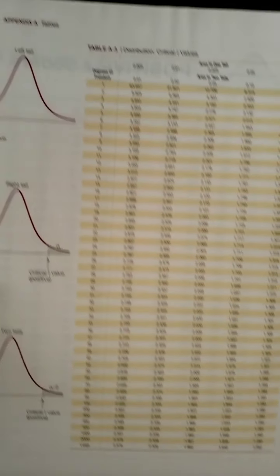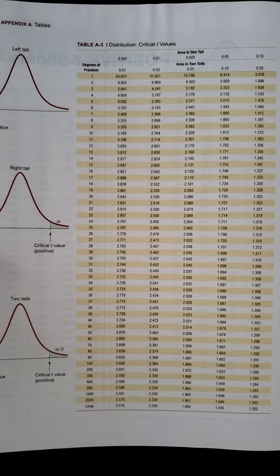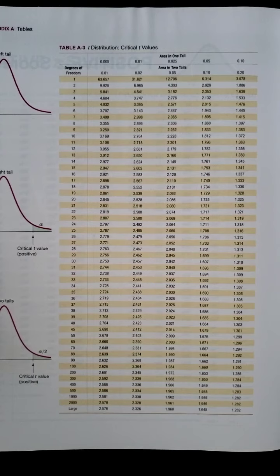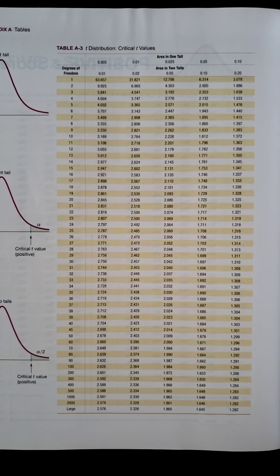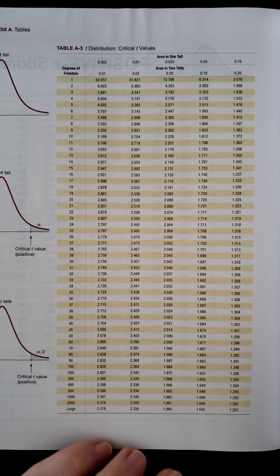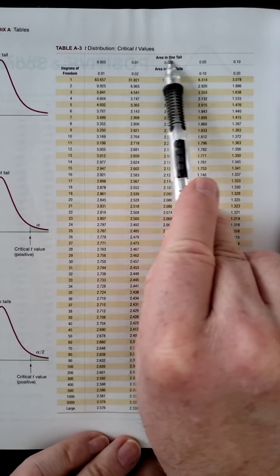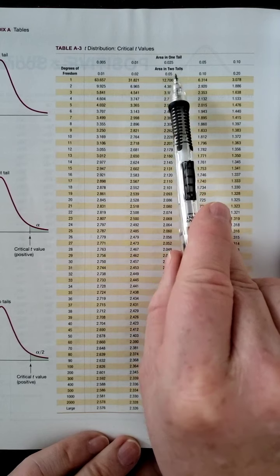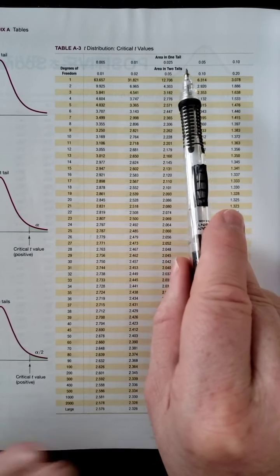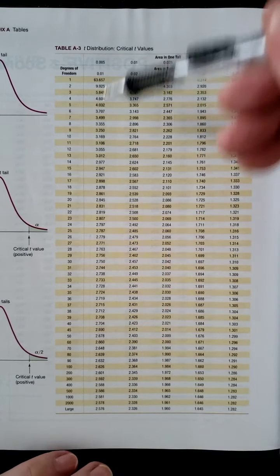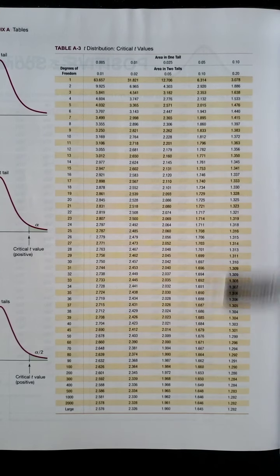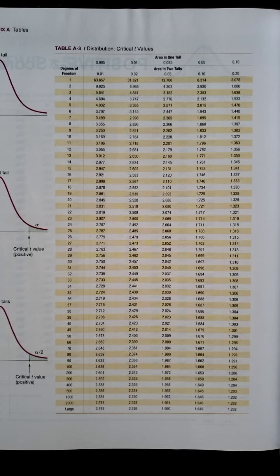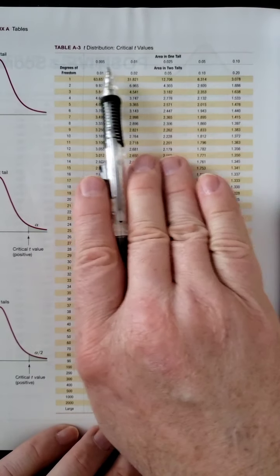So, if we go to our table now, A3. I'll try to zoom in when we need it. So, there's a couple of things that we see across the top. We've got area in one tail. We've got area in two tails. So, the nice thing about this table is that no matter which one you find, you should always fall into one of these five columns here. So, one of these five columns is always going to be your focus. So, in this case, you can kind of see,